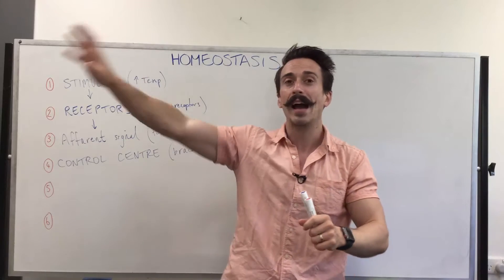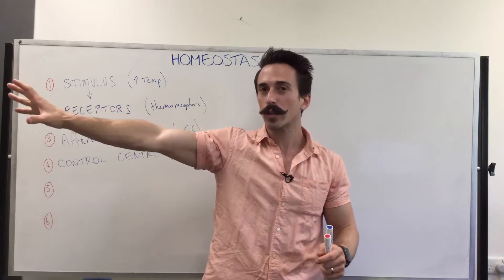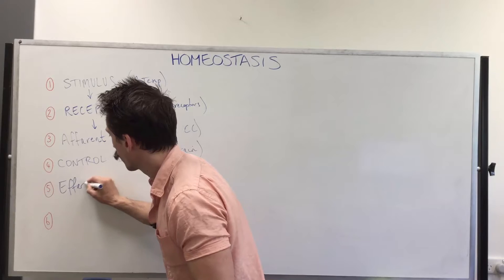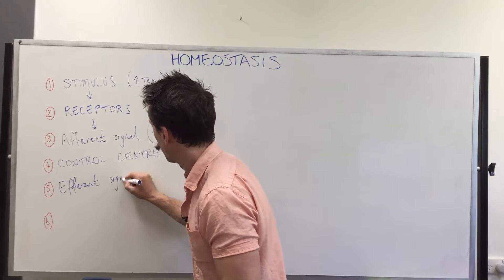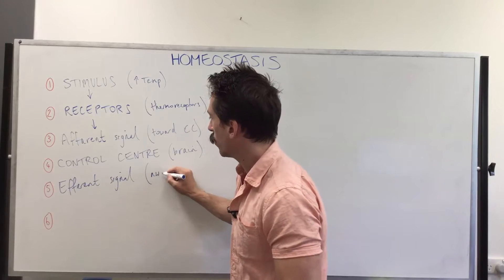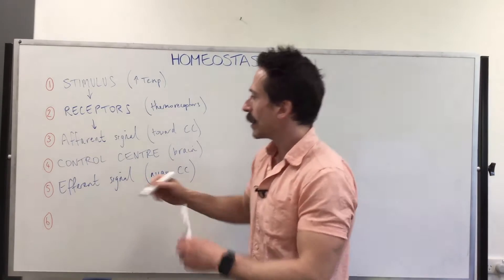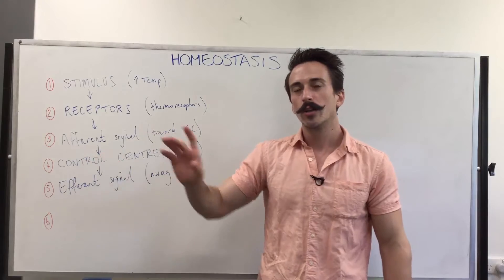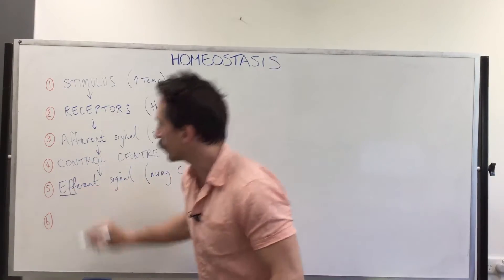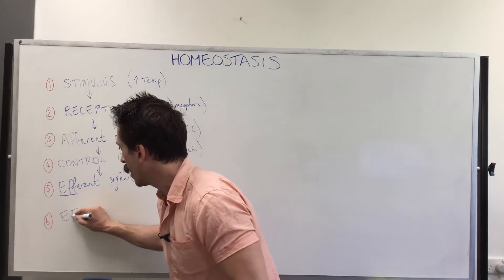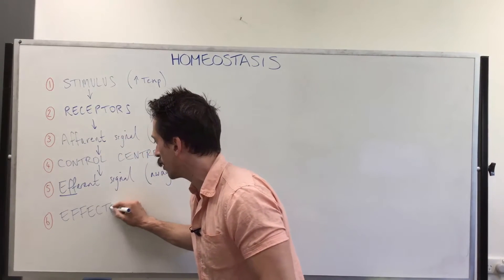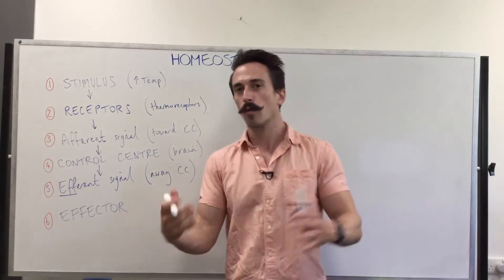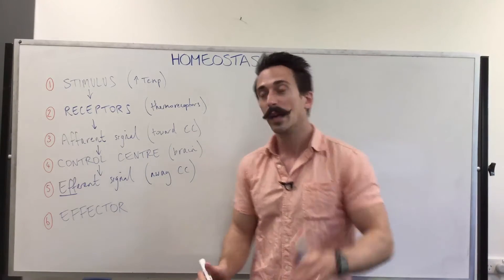The brain has evaluated the information and made a decision. Then it sends a signal out. This outward signal going away from the control center is called an efferent signal. The efferent signal sends a signal to an effector. The effector makes a change — it has an effect. In this case, remember we said sweating, so the effector will be the sweat glands.